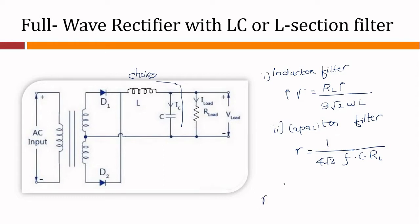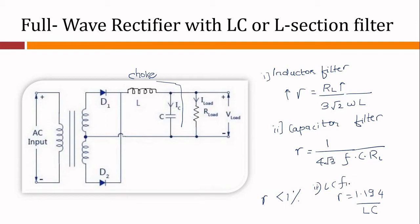Theoretically, the value of ripple expressed in percentage should be less than 1%, and is given as 1.194 divided by LC. How we arrived at this equation has been explained in the online class session and is also included in this presentation as an analysis. This expression is for the LC filter — let me mark this as third case: LC filter.